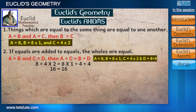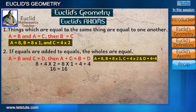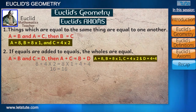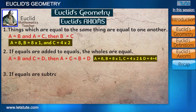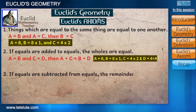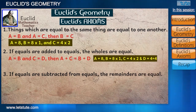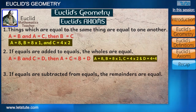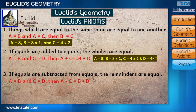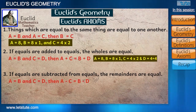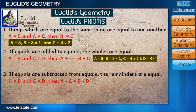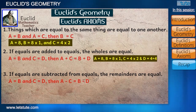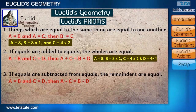The third axiom is similar: if equals are subtracted from equals, the remainders are equal. That is, if a equals b and c equals d, then a minus c will equal b minus d.